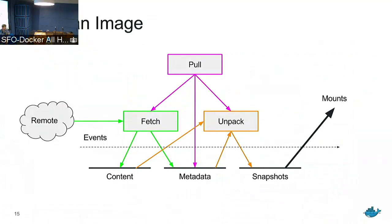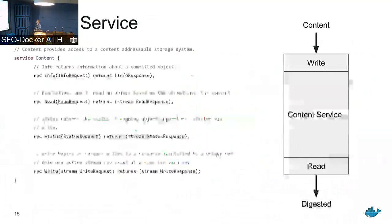Pull is represented by purple — poll will instruct fetch to start, and fetch will consume data from a remote and put it into the content store, then register that content with the metadata store. Poll stores the status of the fetch in the metadata store, correlating all the metadata. Once the content is pulled from the remote, we start the unpack process — pulling from the content store and the metadata store — with the goal of creating snapshots.